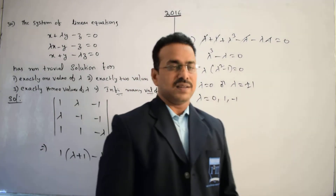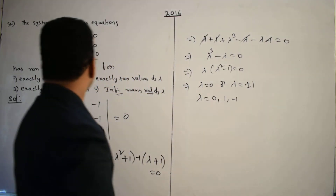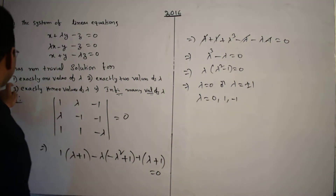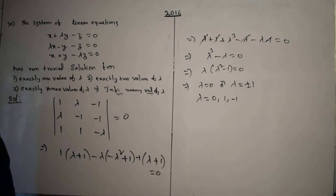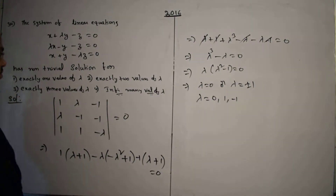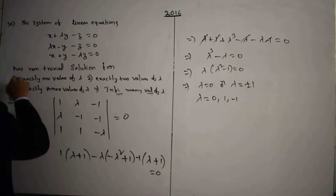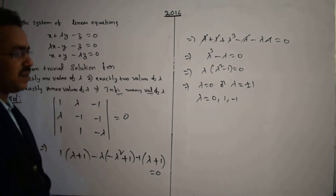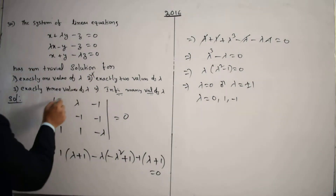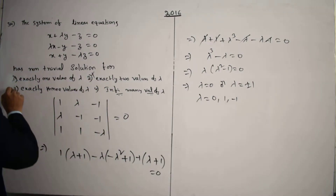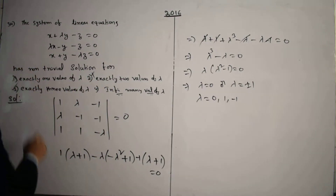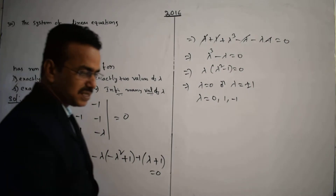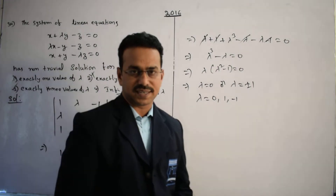Now let's compare with the given options. The first option — exactly one value of λ — is incorrect. The second option — exactly two values of λ — is also incorrect. The third option — exactly three values of λ — is correct. The rest of the options are incorrect.